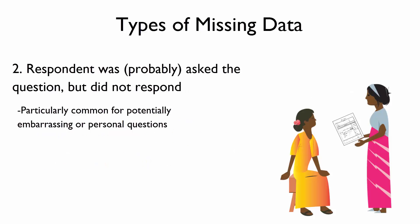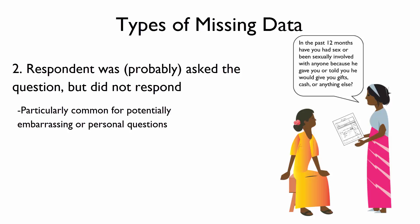The second type of missing data is when a respondent was asked a question but didn't respond. Why might someone being interviewed not answer a specific question? Although every attempt is made to make the respondent comfortable, sometimes respondents will say they don't know or refuse to answer a question. Remember that respondents have the right to refuse to respond at any time or to any portion of the questionnaire.